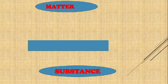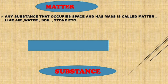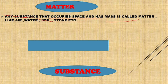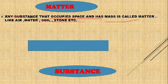First, we need to learn about matter. You have studied this in chapter 1. Any substance that occupies space and has mass is matter — like water, soil, stones and many other things. Matter contains many types of particles like different gases, smoke particles, and dust particles.